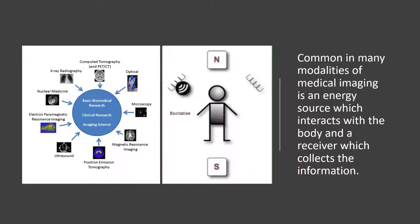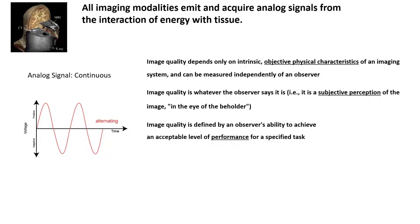It is common in many modalities of medical imaging to use an energy source which interacts with the body and a receiver which collects the information of the interactions to produce an image. All imaging modalities emit and acquire analog signals from the interaction of energy with tissue, and these are changed to digital signals for the image.